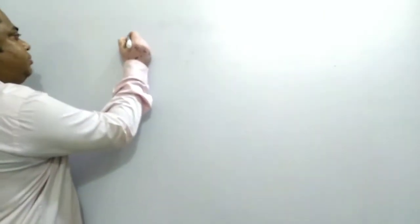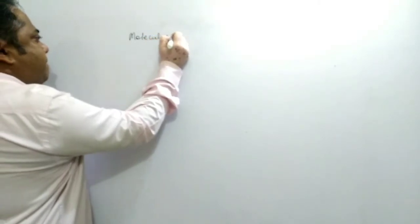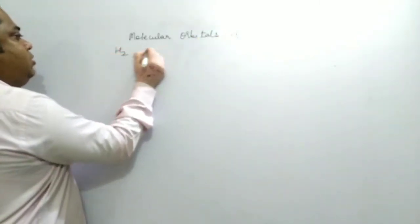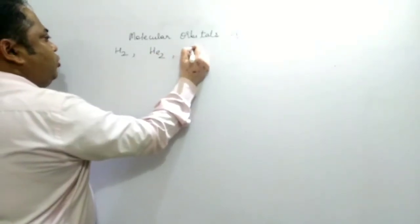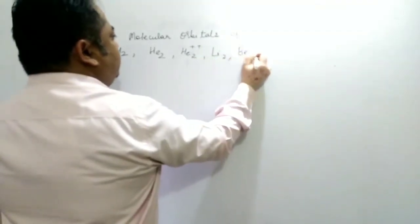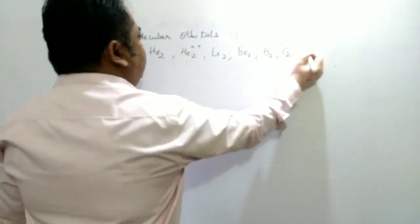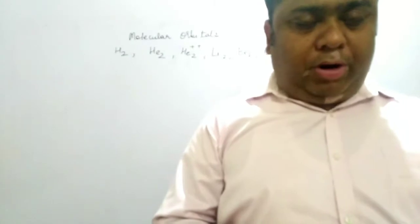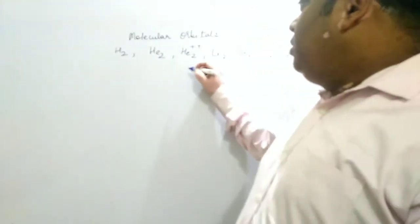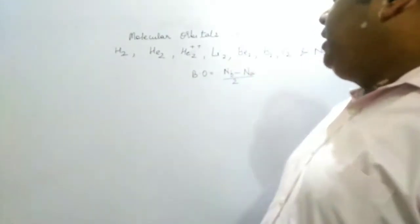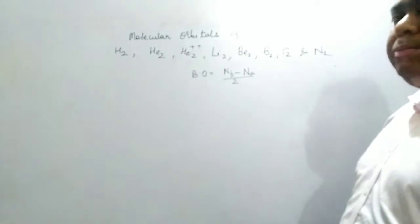We had seen the molecular orbitals of hydrogen, helium, helium 2+ ion, lithium 2 ion, beryllium 2, boron 2, carbon 2, and nitrogen 2. We found out the bond order by calculating the number of bonding electrons and anti-bonding electrons. Bond order was found by the formula: number of bonding electrons minus number of anti-bonding electrons, divided by 2. It gave us an idea about how many covalent bonds are possible between two atoms.